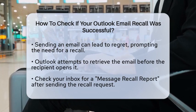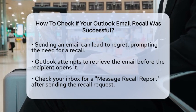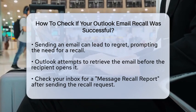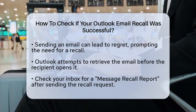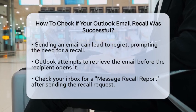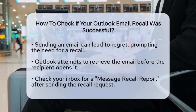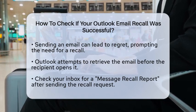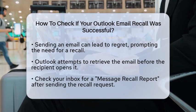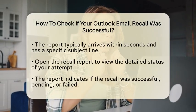When you try to recall an email in Outlook, the system will attempt to retrieve that message from the recipient's mailbox before they open it. The first thing you should do is check your inbox for a Message Recall Report. This report usually arrives within seconds after you send the recall request. The subject line will look something like 'Message Recall Report for Message: Original Message Subject'.